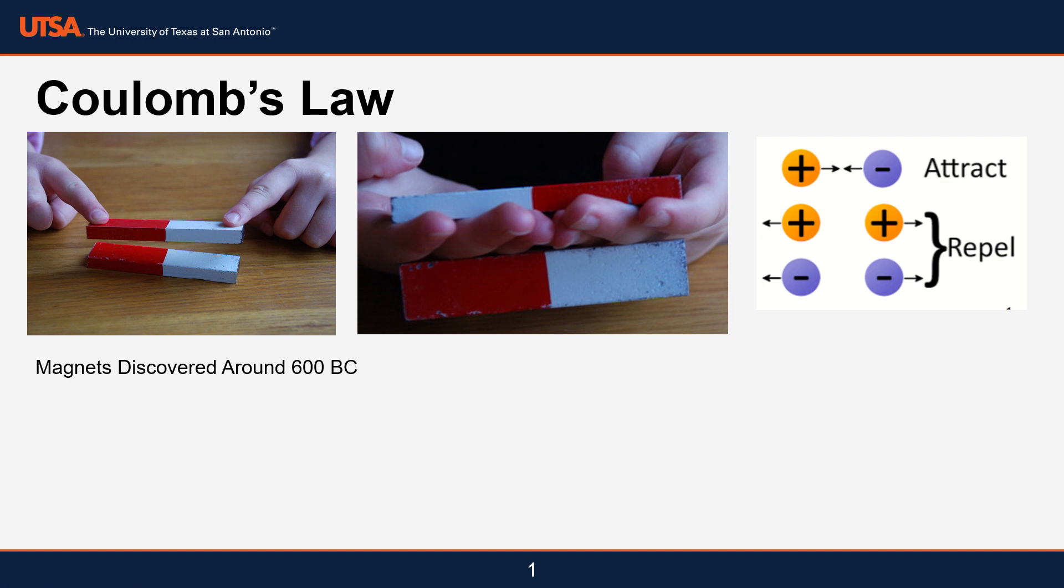You might have remembered that your elementary teacher told you that opposite charges attract and like charges repel. Well, that's true. Magnets have been around since 600 BC. So put yourself in the mindset of Coulomb. Magnets have been around for about 2,000 years before he started doing his work, and there's these mysterious forces going on. Coulomb asked, what is the force between these two? Just imagine yourself being a little kid trying to push these together and wondering how much force it takes.